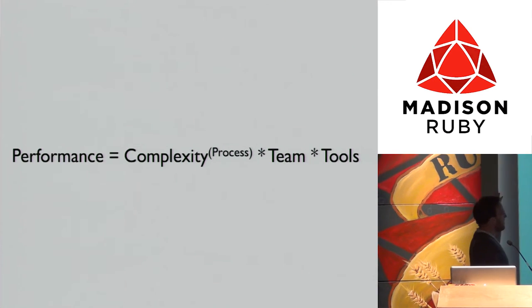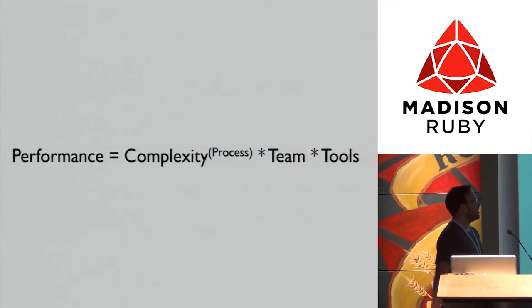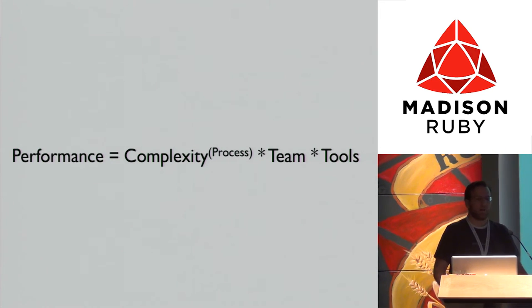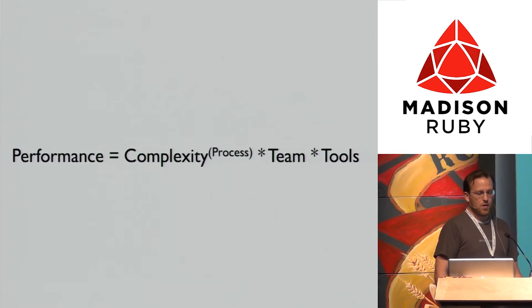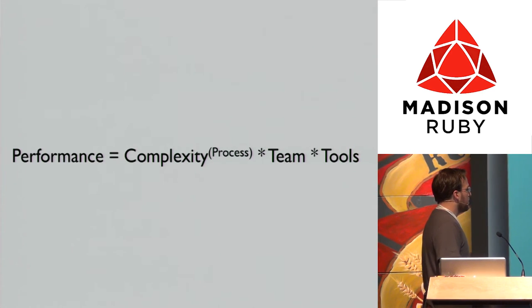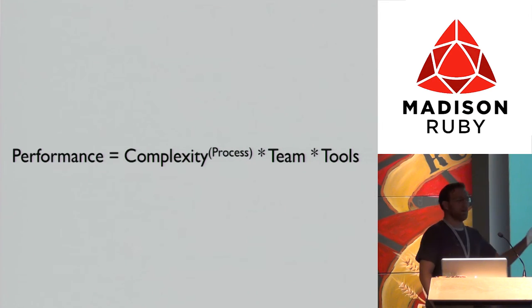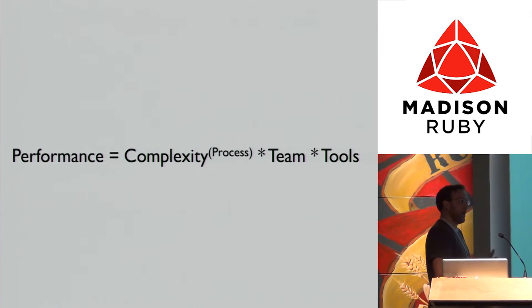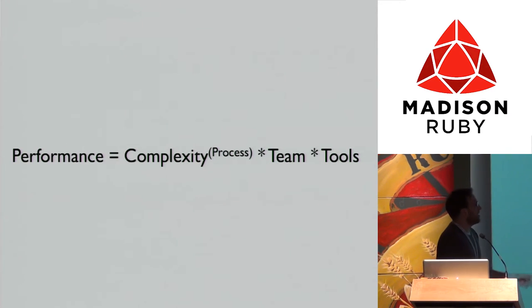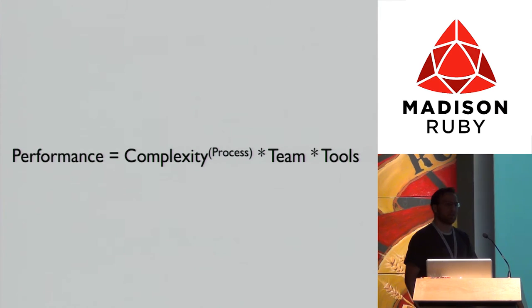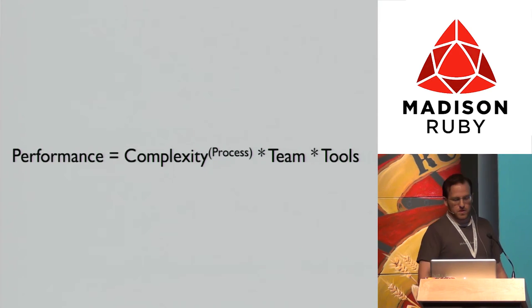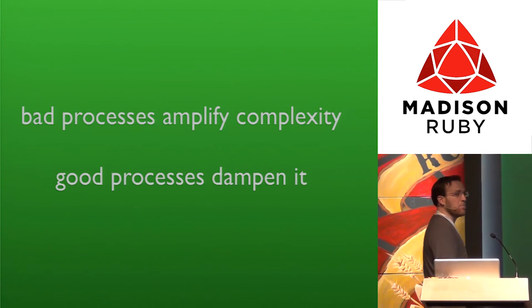This equation here is from the COCOMO2 cost performance model. I watched a video where Grady Booch talked about this. Performance is your complexity with processes as an exponent times teams times tools. The interesting thing here is that complexity is the major impacting factor of your ability to perform on your application development over time. Since process is an exponent, a good process can really dampen complexity, whereas a bad process can really amplify that complexity.